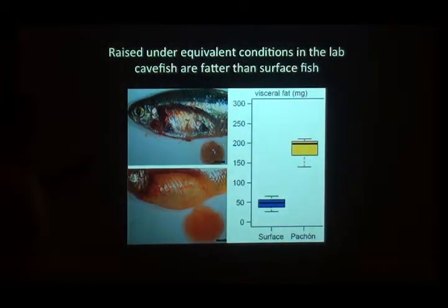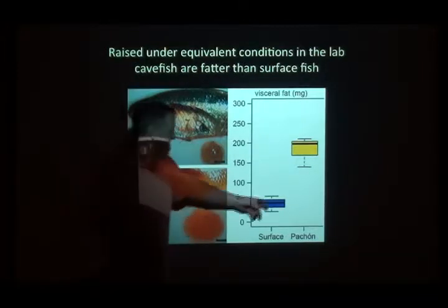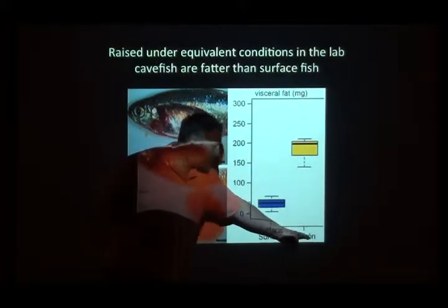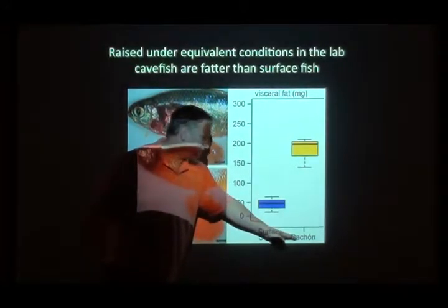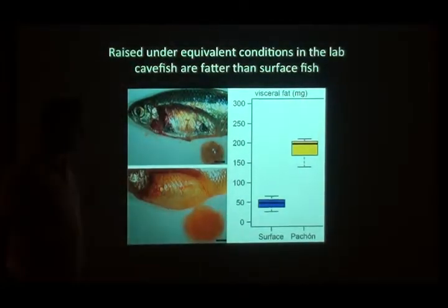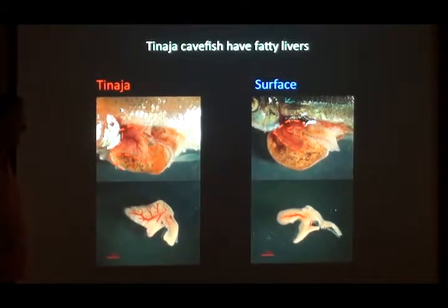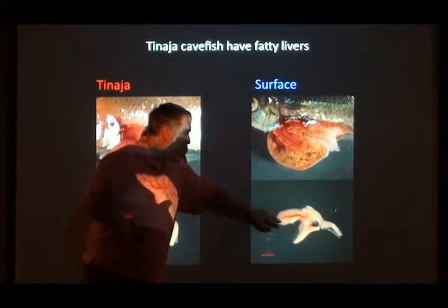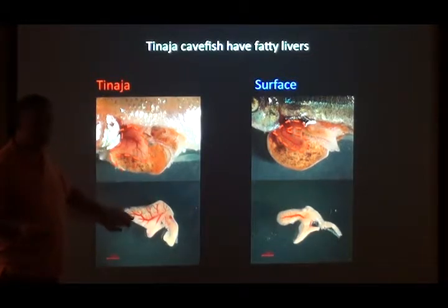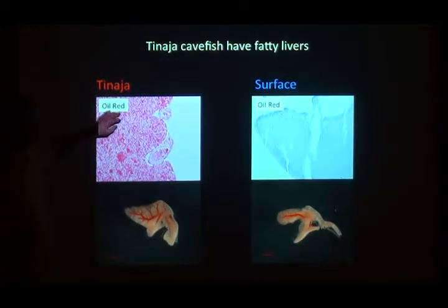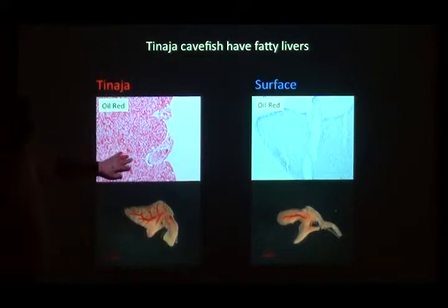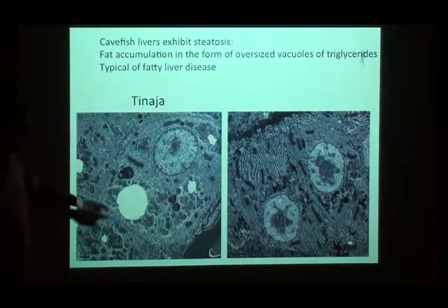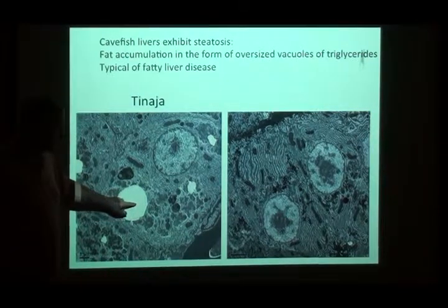These are fish raised under equivalent conditions in the lab where they can eat whatever they want. The cave fish — from the Pachón cave specifically — are fatter than the surface fish. And one of the places they put that fat is into the liver. The surface liver is small; the cave fish liver is huge. Not only is it huge, but staining with Oil Red O for lipids shows it's absolutely covered with lipid. These fish have the same large lipid globules seen in human disease livers — steatosis.